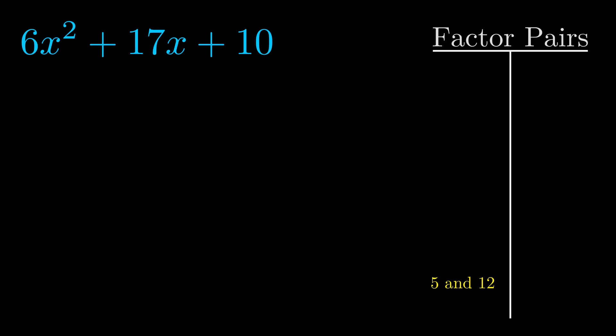Now once we have this factor pair, what we want to do is use it to split up the b value.